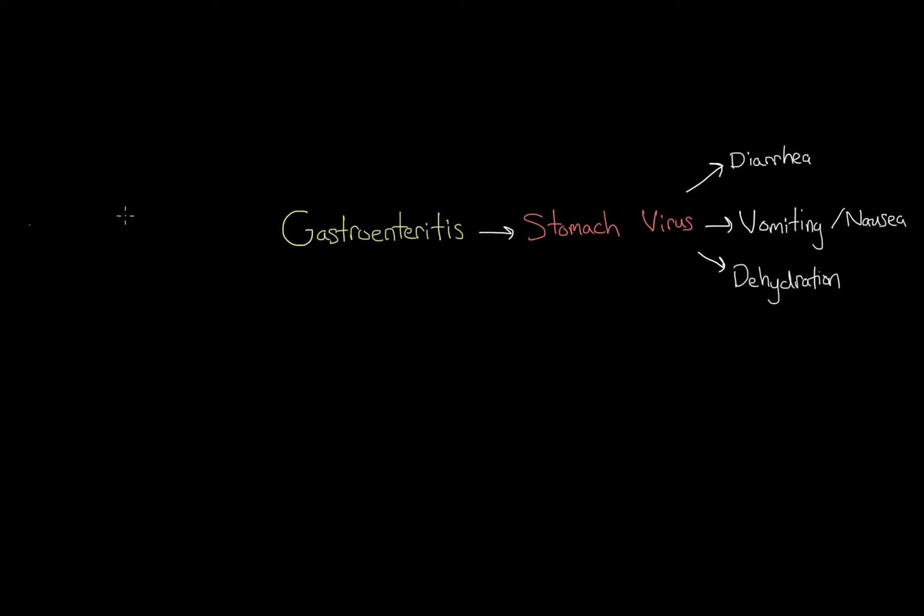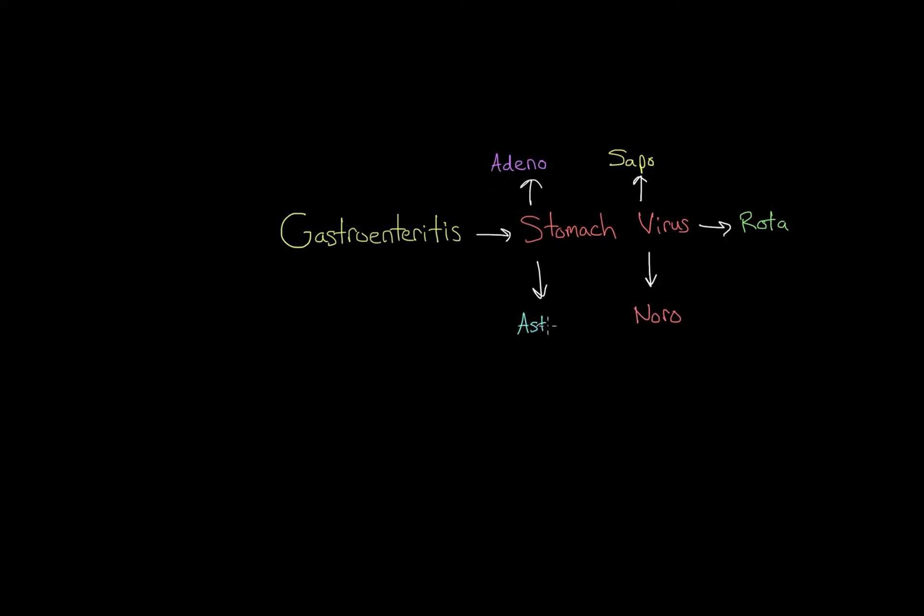What exactly is causing all these symptoms? I think the word stomach virus can give us a good hint. Sometimes gastroenteritis can be caused by bacteria, but for the most part it's caused by some kind of virus. There are really many different types of viruses that can do this. Some examples include the adenovirus, the sapovirus, the rotavirus, the norovirus, and the astrovirus. So a lot of different viruses can cause gastroenteritis, and this is really just a handful of them.